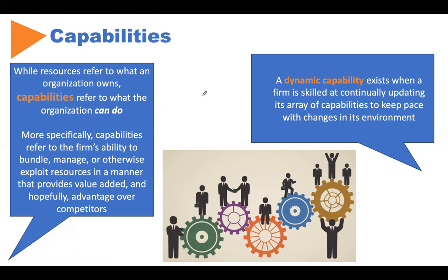We also identify something called a dynamic capability. We have dynamic capabilities when we are keeping pace with our external environment — we are updating our capabilities, staying with it, and making sure we are learning and staying up to date to meet the demands in the external environment. Together, our resources — tangible and intangible — and our capabilities — dynamic or otherwise — make up our core competencies, and our core competencies are what make us successful in the marketplace.